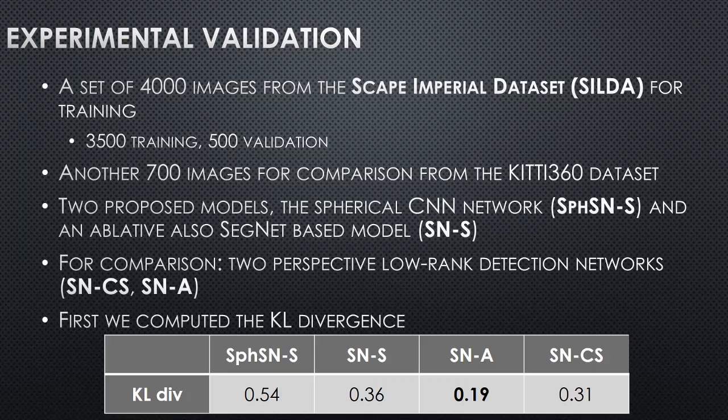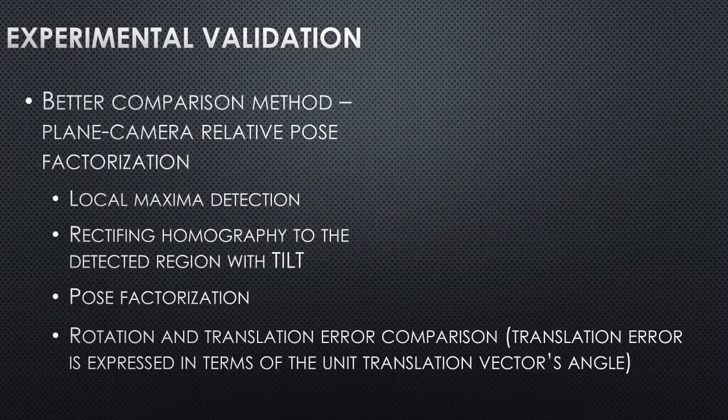In the brackets you can see the denotation of these networks. First, we computed the KL divergence between the TILT maps and the predictions of the network. However, the KL divergence isn't the best way to compare the results, because the TILT maps aren't true ground-truth data. So, for a better comparison, we created a plane-camera relative pose factorization based evaluation method.